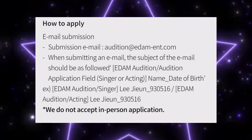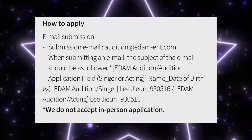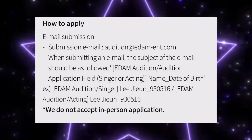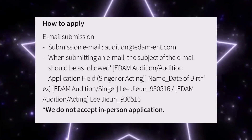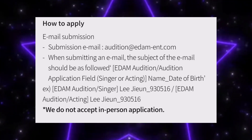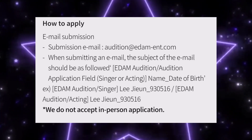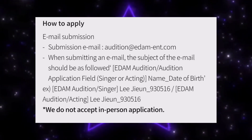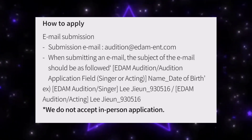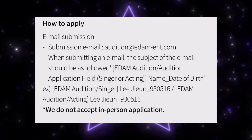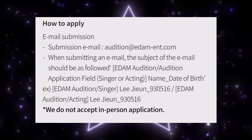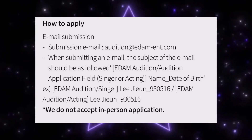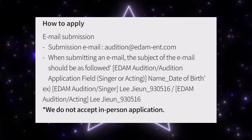You need to apply to this audition by email. In the subject of your email, write down: EDM Audition, then your audition field — acting or singing — then your name, then date of birth. For example: EDM Entertainment Audition, Singer, [your name], then your date of birth formatted as year, then month, then date.